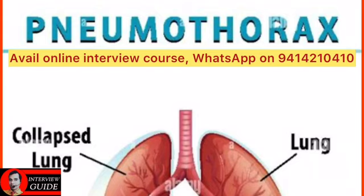Secondary causes of pneumothorax include asthma — do a chest X-ray to rule out pneumothorax — emphysema, TB, staph pneumonia, lung abscess, cancer, cystic fibrosis, trauma, and connective tissue disorders like Marfan syndrome.